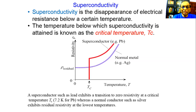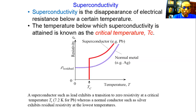But for the superconductor, the property is not like that of the normal conductor. The resistivity decreases and at a temperature Tc, suddenly the resistivity drops down to zero. This is the property of the superconductor. A superconductor such as lead exhibits a transition to zero resistivity at critical temperature Tc, which is 7.2 degrees Kelvin, whereas normal conductors such as silver exhibit residual resistivity at the lowest temperature.